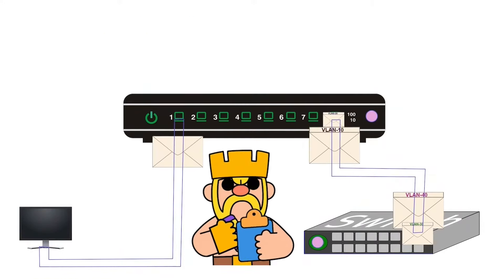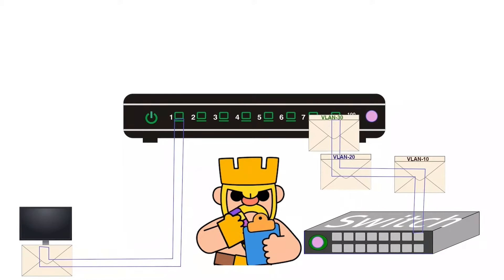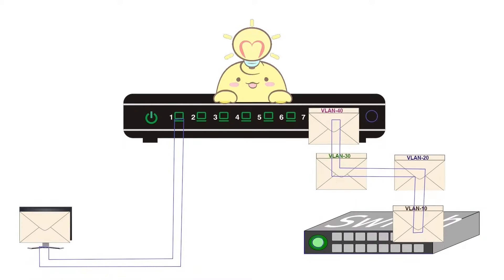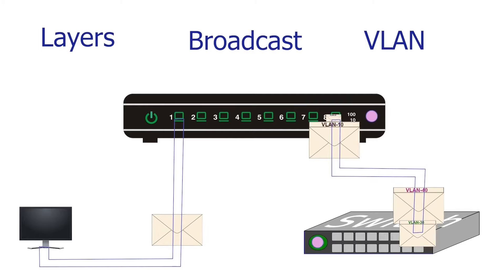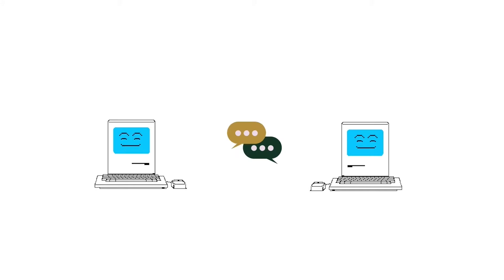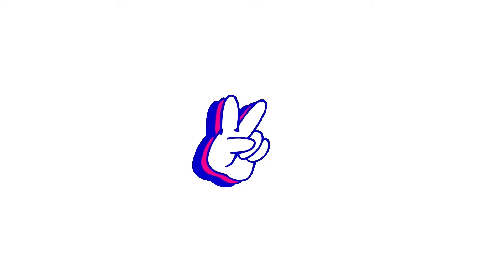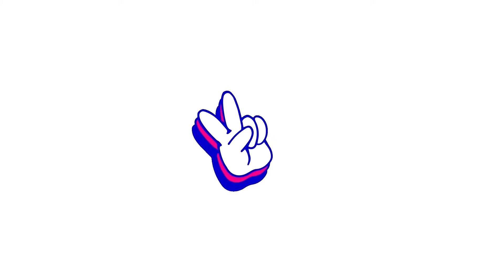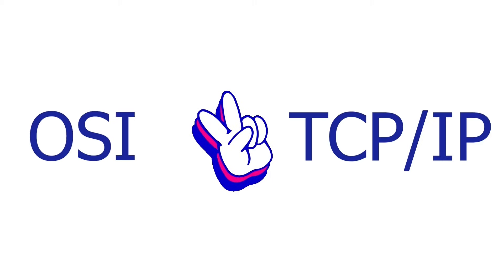Before we discuss more differences between an access port and a trunk port, let us understand three basic terms: layers, broadcast, and VLAN. Networking models define how devices communicate on a network. There are two popular networking models: OSI and TCP/IP.